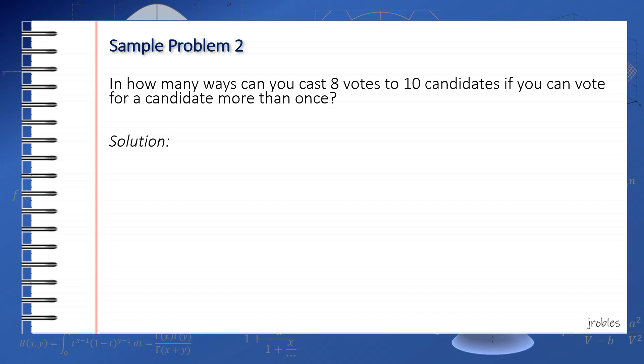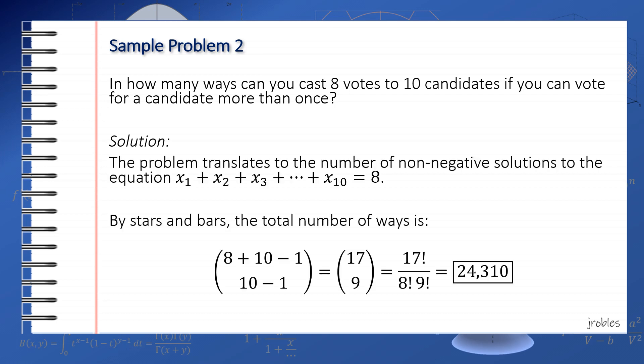We are essentially grouping 8 stars into 10 groups. By stars and bars, the number of groupings is equal to C(8+10-1, 10-1) or simply C(17,9). Of course, if you are a little confused, you can still work on this by writing first the integer equation, which is x_1 + x_2 + ... + x_10 = 8.